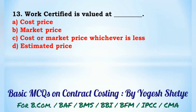Question 13: Work certified is valued at — (A) cost price, (B) market price, (C) cost or market price whichever is less, (D) estimator price. Work certified is valued at cost price. Answer: A.